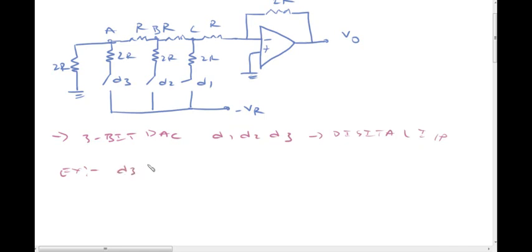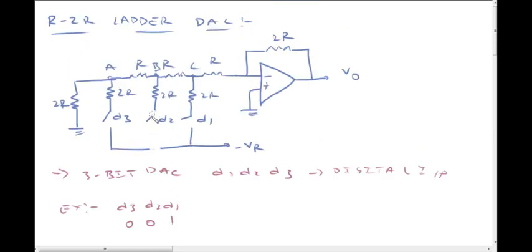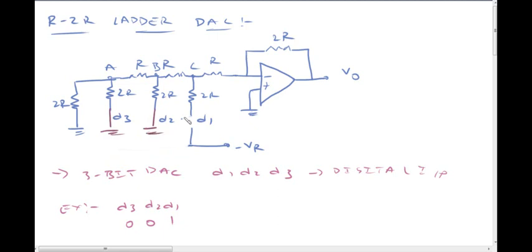The inputs are D3, D2, D1. For example, consider the input 0, 0, 1. In this position, D2 and D3 are 0, connected to ground. D1 switch is closed and connected to the reference voltage. So D3 is connected to ground — input 0. D1 switch closes, connecting to the negative reference voltage Vr.